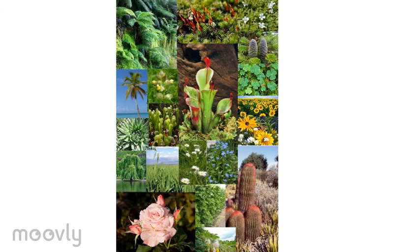Let's do a quick recap of everything that was discussed today. We have the roots, which anchor the plant into the ground and absorb water and nutrients. The stem supports the leaves and flowers and transports water from the roots to the leaves. The leaves take the water and nutrients and combine them with sunlight in a process known as photosynthesis to create food. The flowers create seeds for new plants to grow. And don't forget the most important thing that a plant does: it creates the air that we breathe.